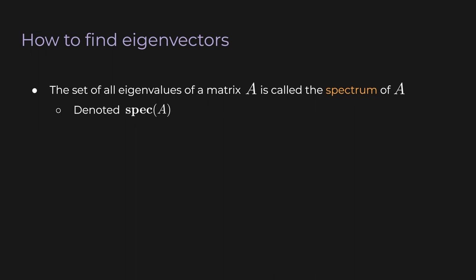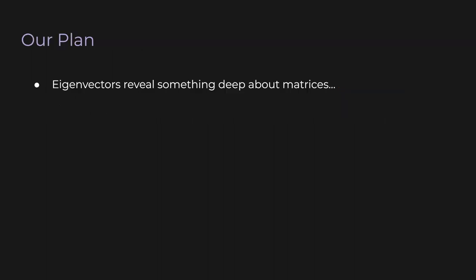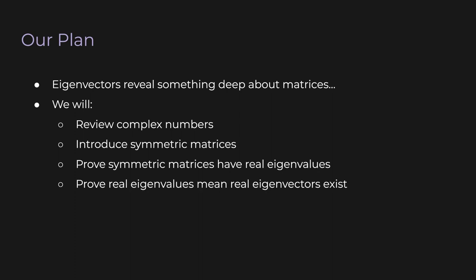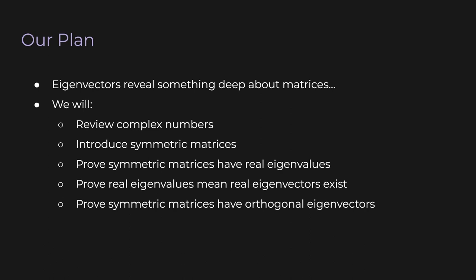So we've got the definitions and the basic computations out of the way, and now we get into the real interesting stuff. Eigenvectors reveal something deep about matrices. To avoid getting lost, here is our plan for the rest of this lecture: we will first review complex numbers, then introduce symmetric matrices, prove that symmetric matrices have real eigenvalues, prove that real eigenvalues imply real eigenvectors exist, and finally prove that symmetric matrices have orthogonal eigenvectors. These facts build up to something amazing — everything will come together into one beautiful coherent whole.